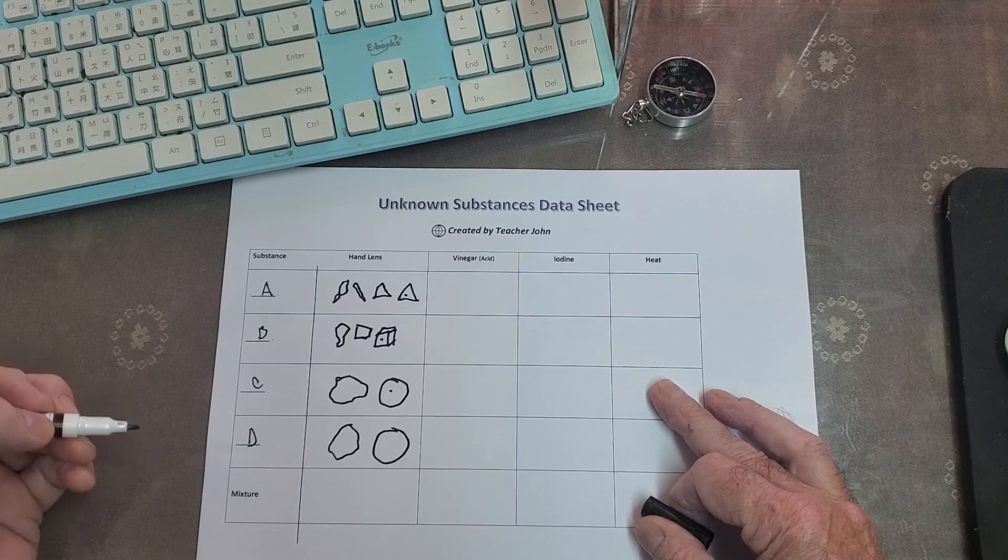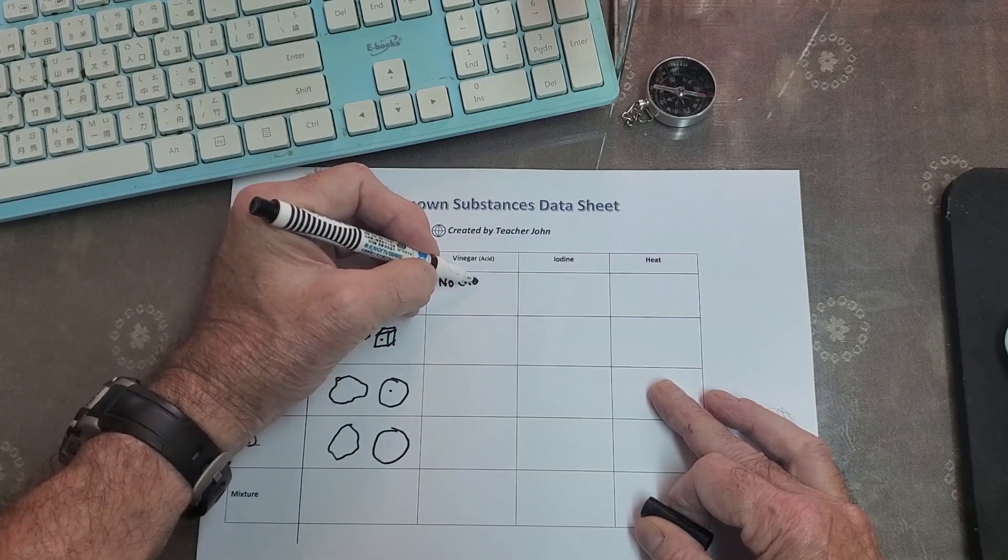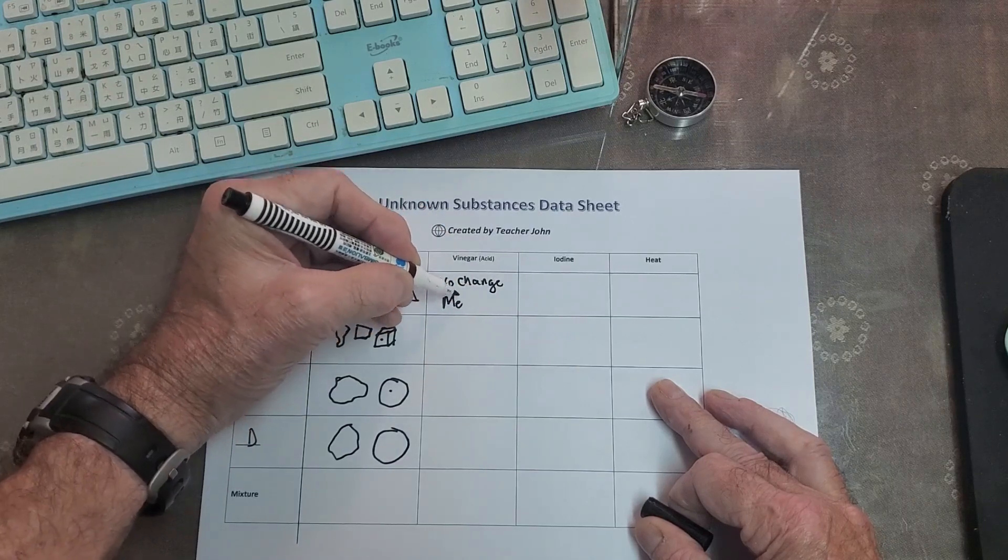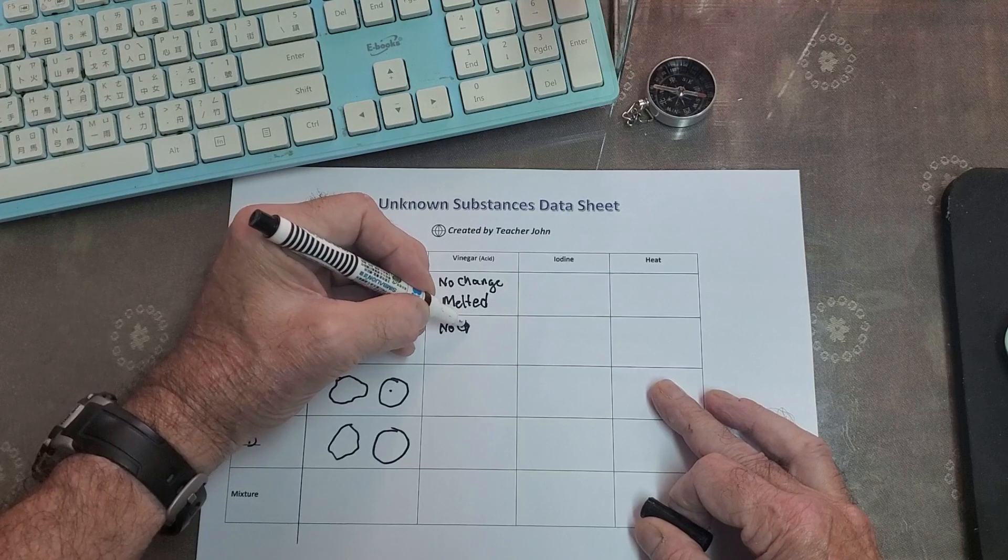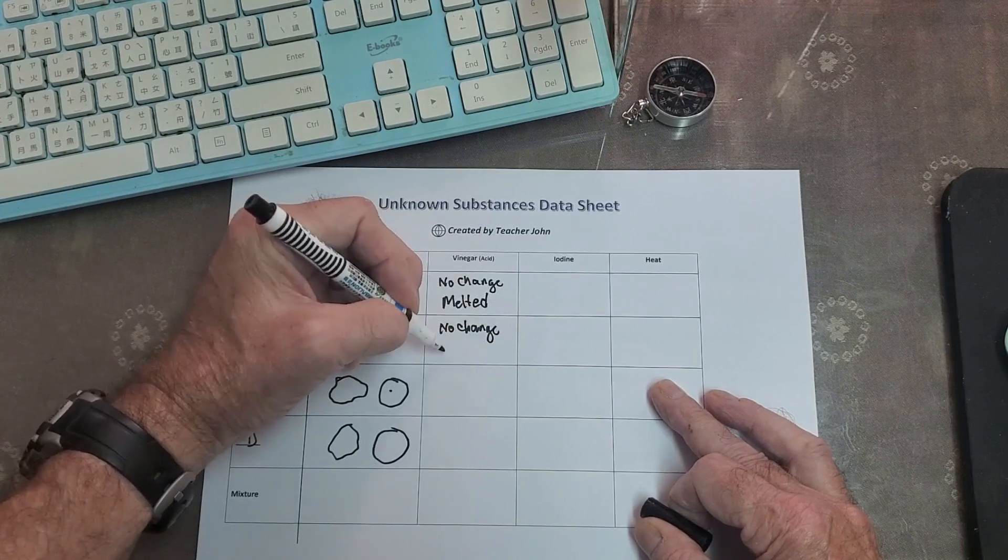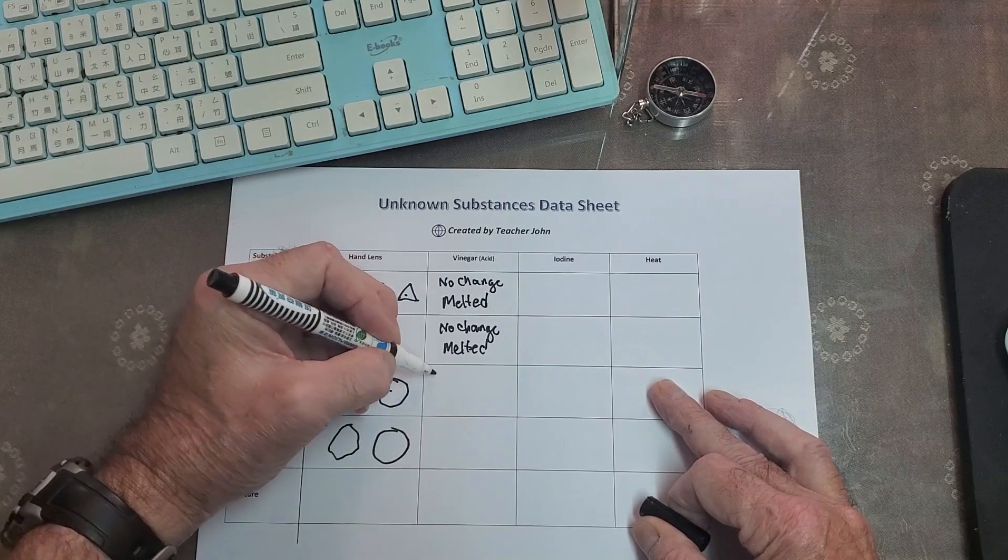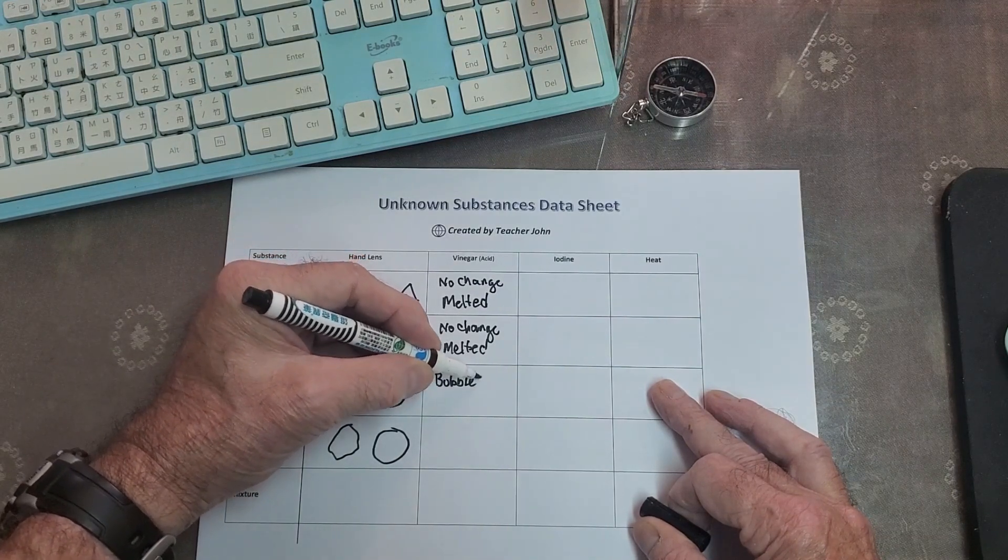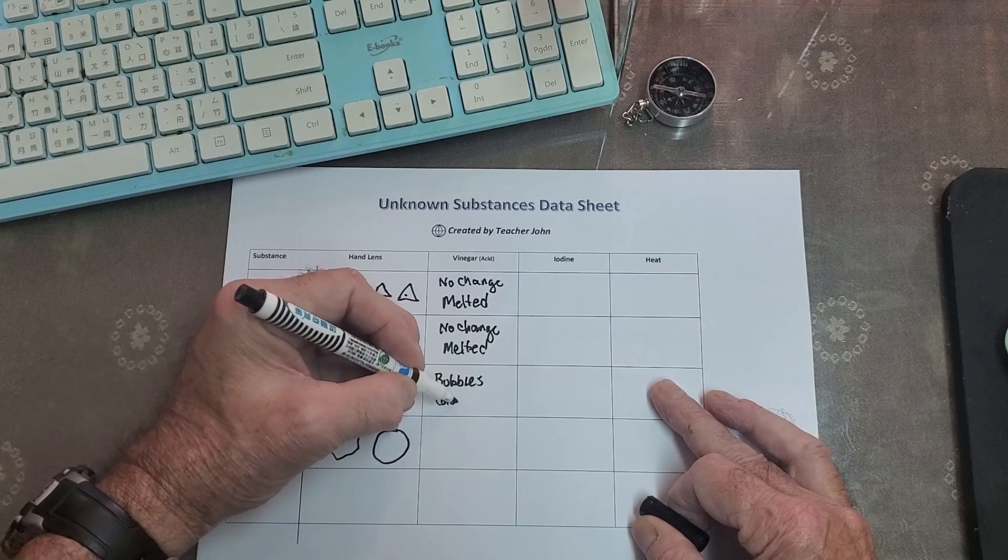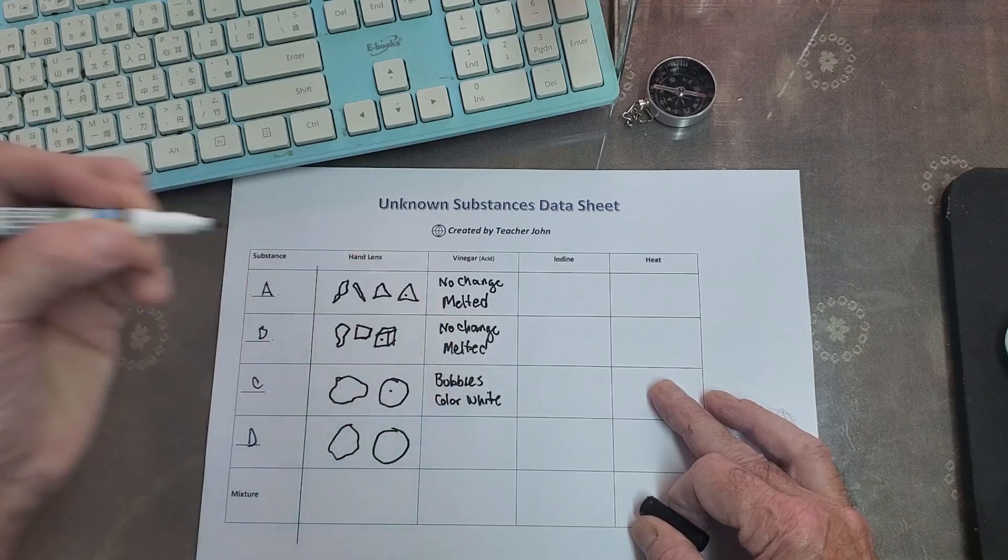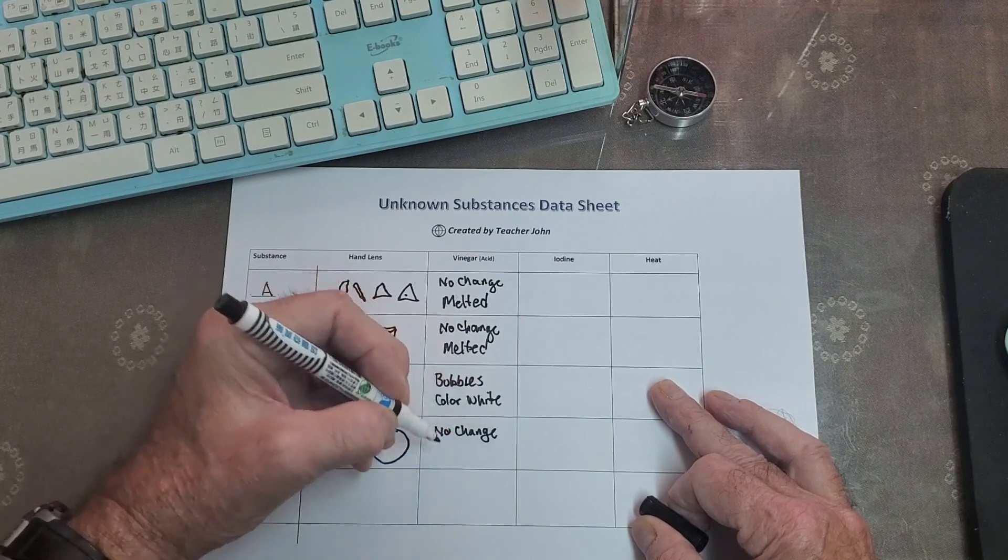Then we tested the vinegar. And the vinegar, really, no change. No change. Or maybe melted. These are sample words. And similar with B. No change. Or melted. C, what happened. We saw lots of bubbles. And color, no change. We just say white. And D, no change. And white.